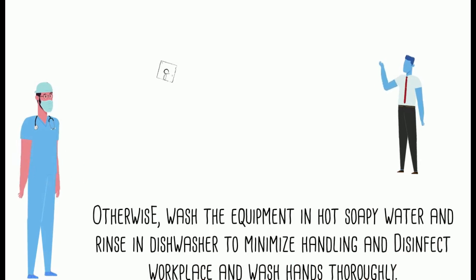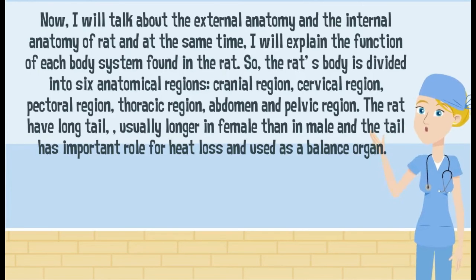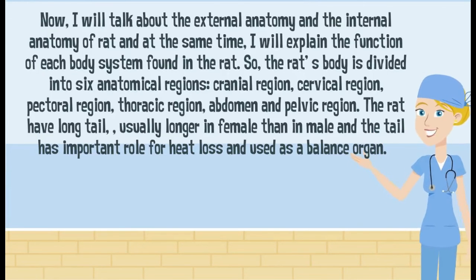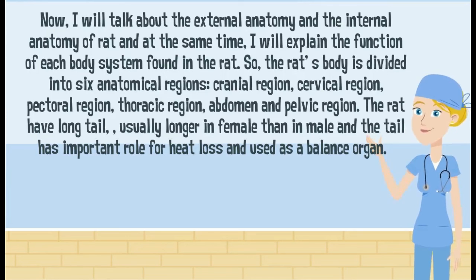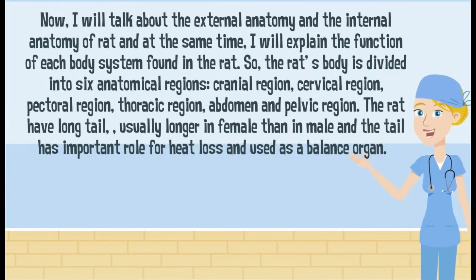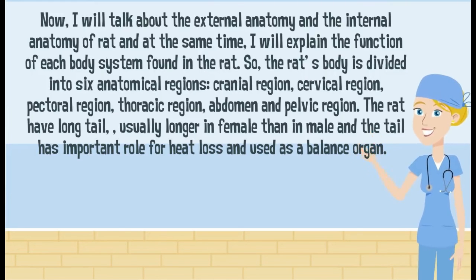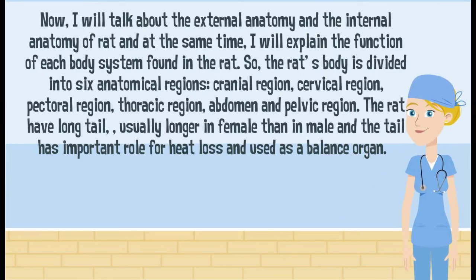Now I will talk about the external and internal anatomy of the rat while explaining the function of each body system. The rat's body is divided into six anatomical regions: the cranial region, cervical region, pectoral region, thoracic region, abdomen, and pelvic region. The rat has a long tail, usually longer in females than in males, and the tail plays an important role in heat loss and is used as a balance organ.